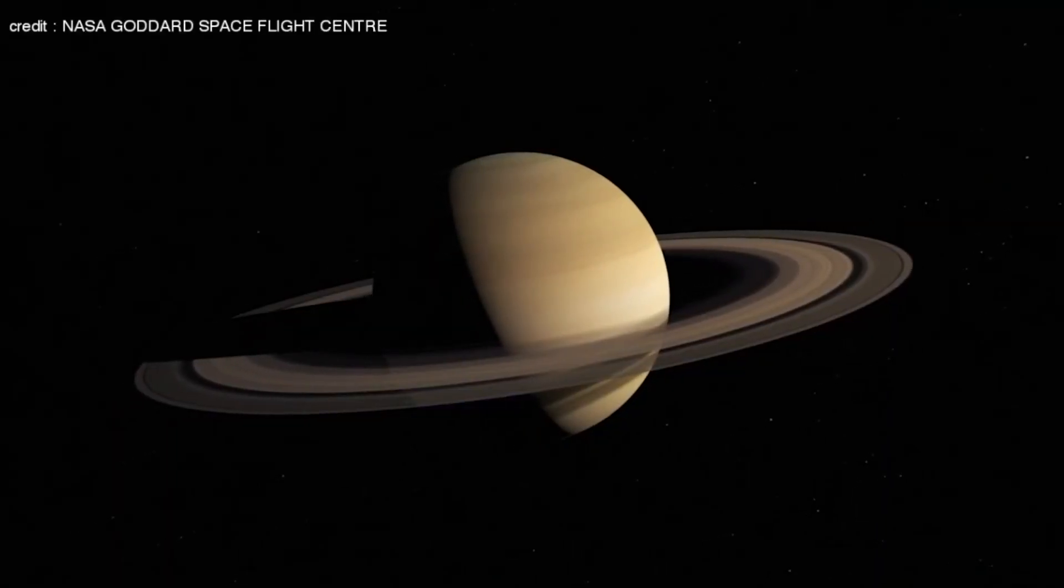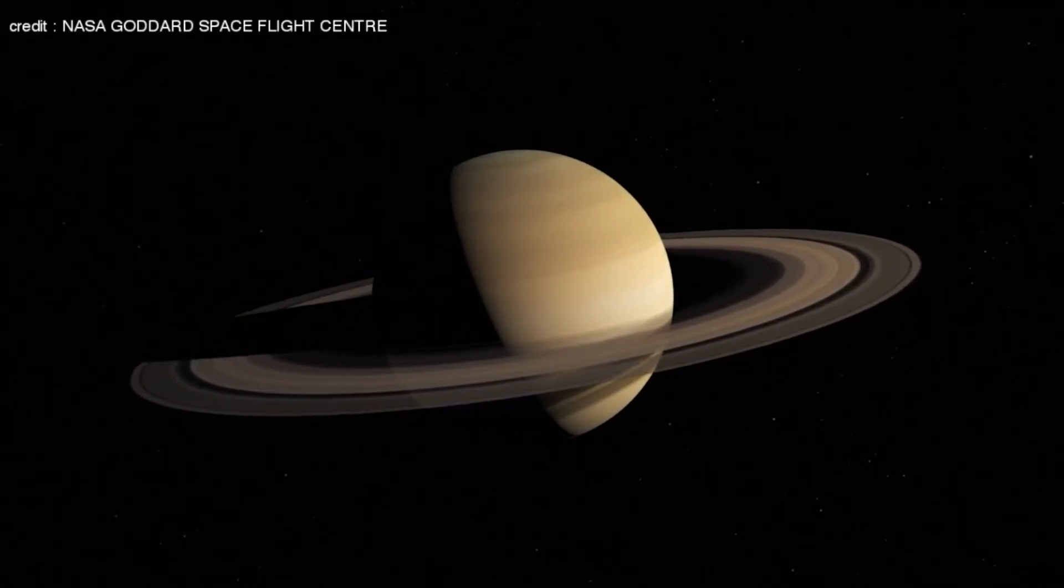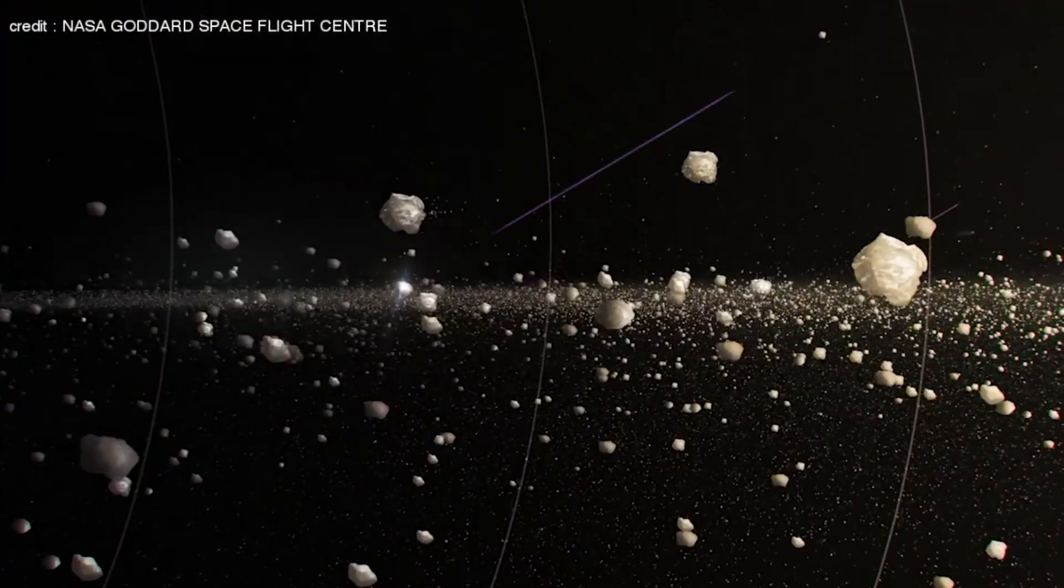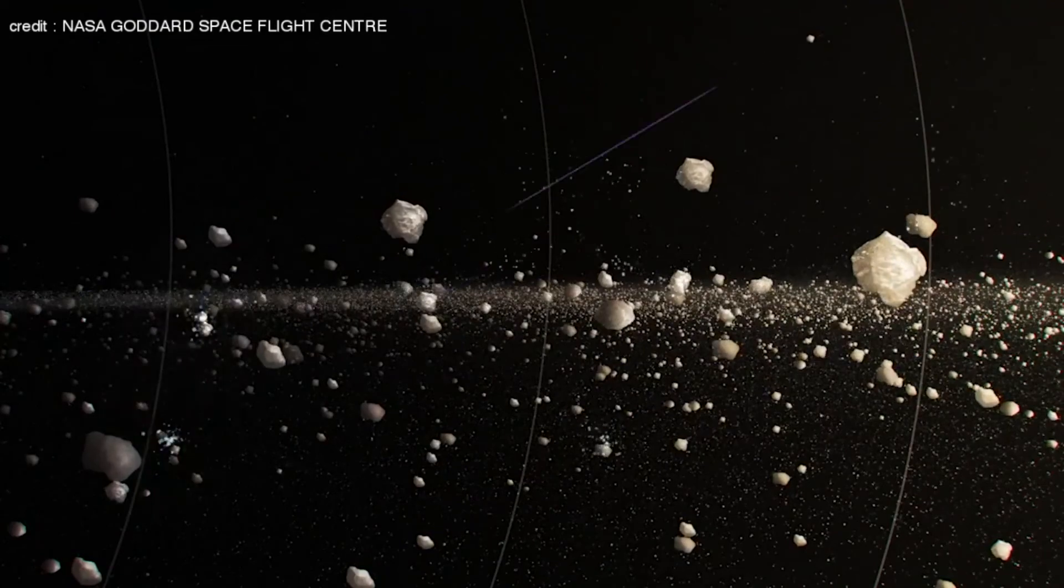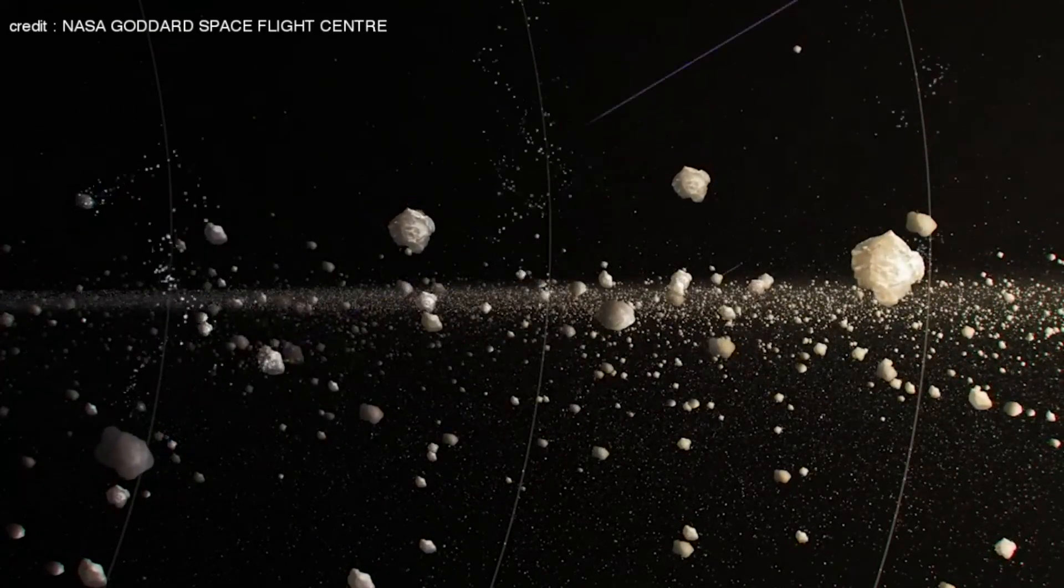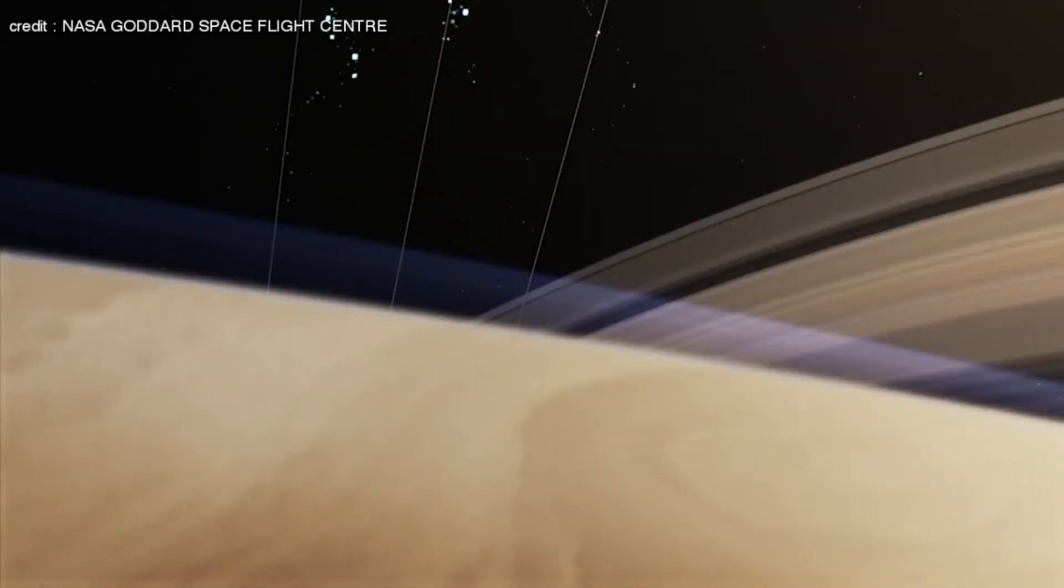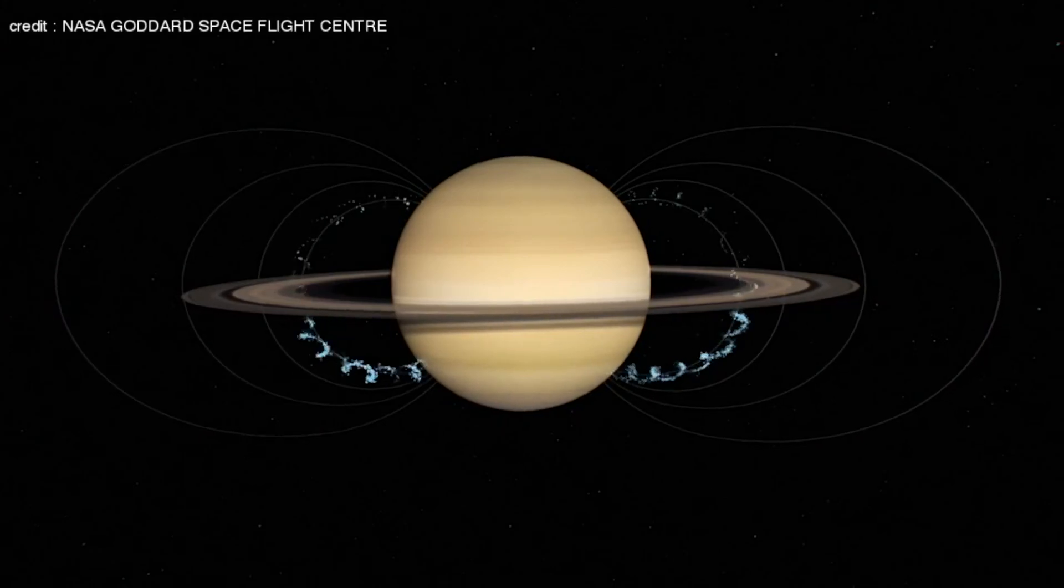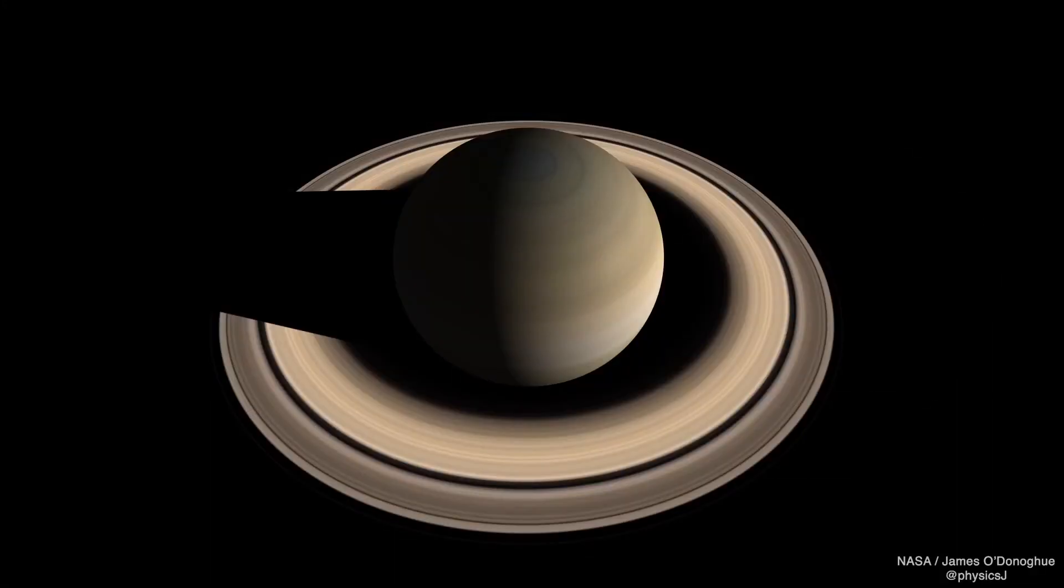The main reason behind ring rain is the ionization of particles. Tiny particles get electrically charged by ultraviolet light from the sun or by plasma clouds from micrometeorite bombardment of the rings. When this happens, the particles feel the pull of Saturn's magnetic field, which curves inward toward the planet. This process is continuous and rapid.